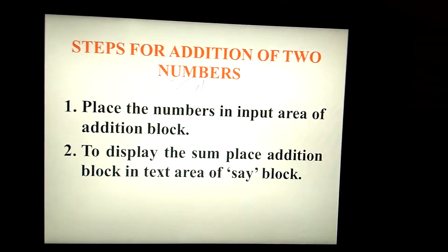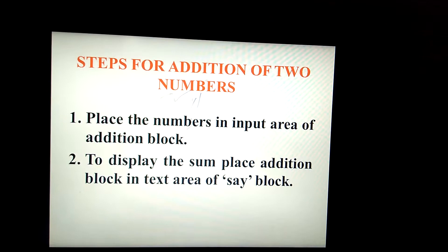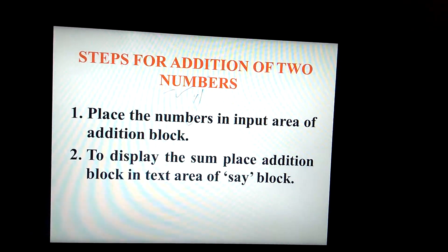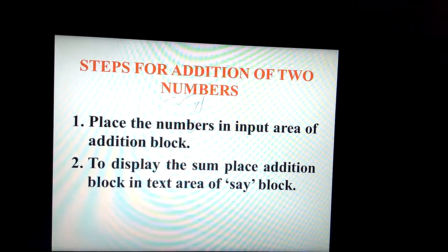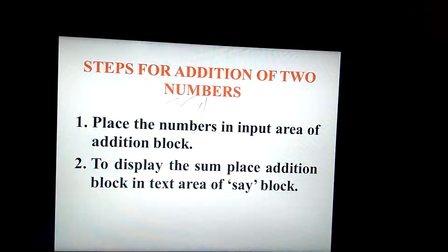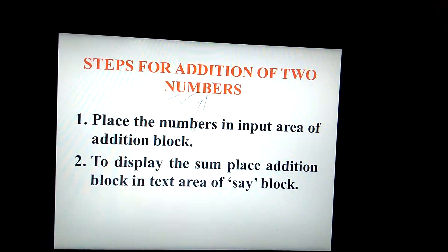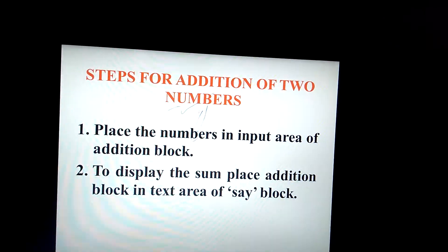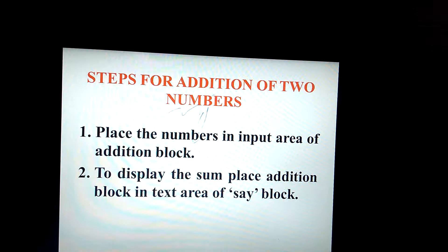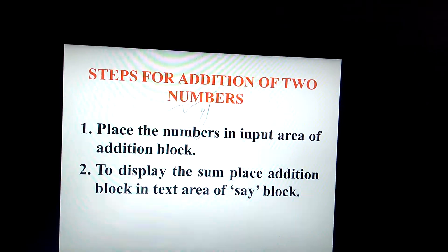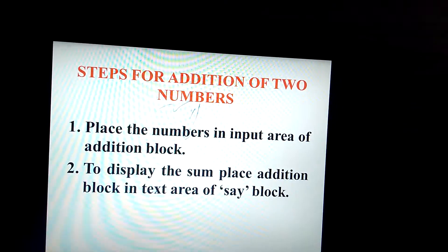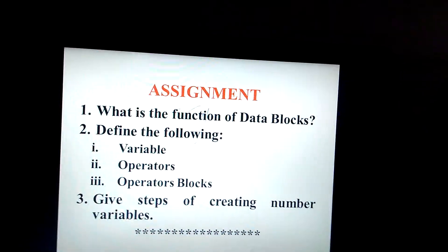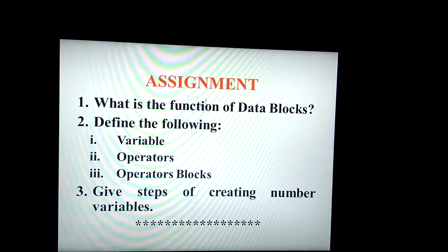Children, you can see the operator blocks from the book as well, where they are also mentioned. Steps for addition of two numbers: place the numbers in the input area of the addition block — there are two vacant spaces where you place the numbers. To display the sum, place the addition block in the text area of the say block.